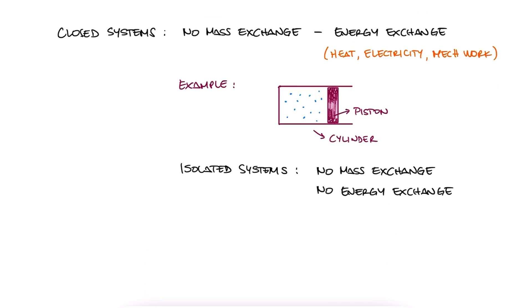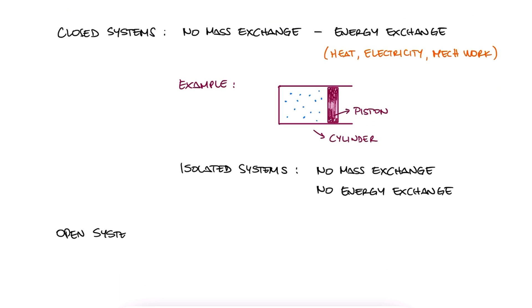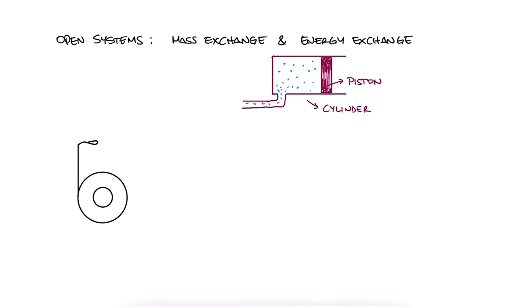Open systems are, on the other hand, systems where both matter and energy flow to and or from the system. An example of this can still be a piston, but in this case with an inlet where mass can flow into it. A turbine is another good example of open systems.